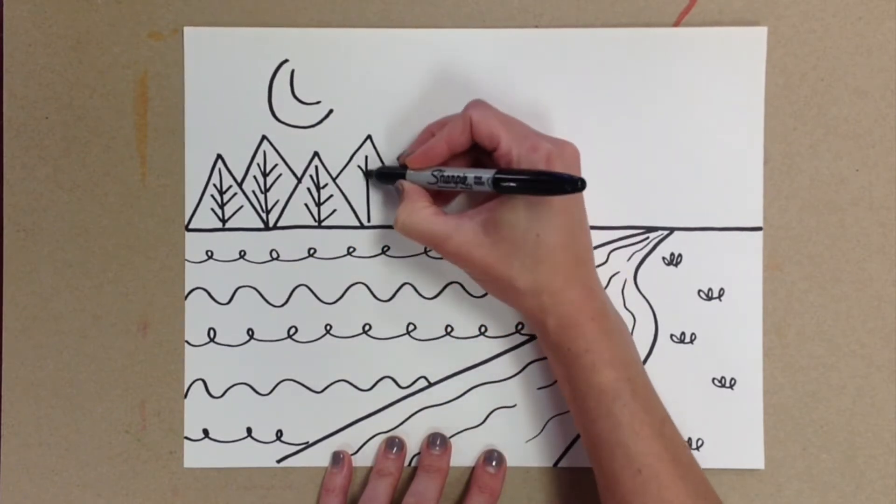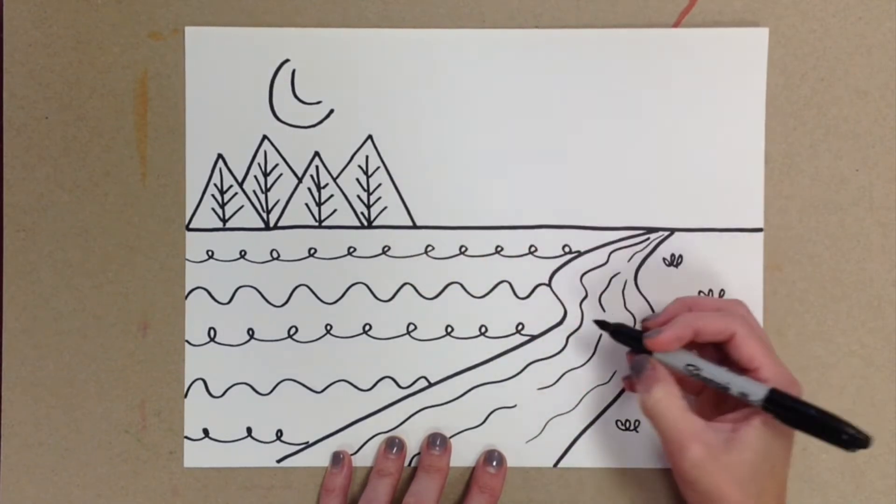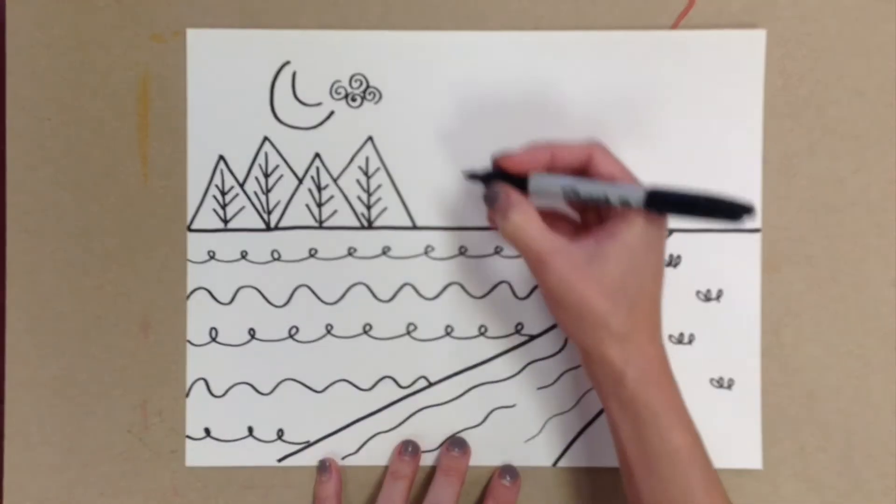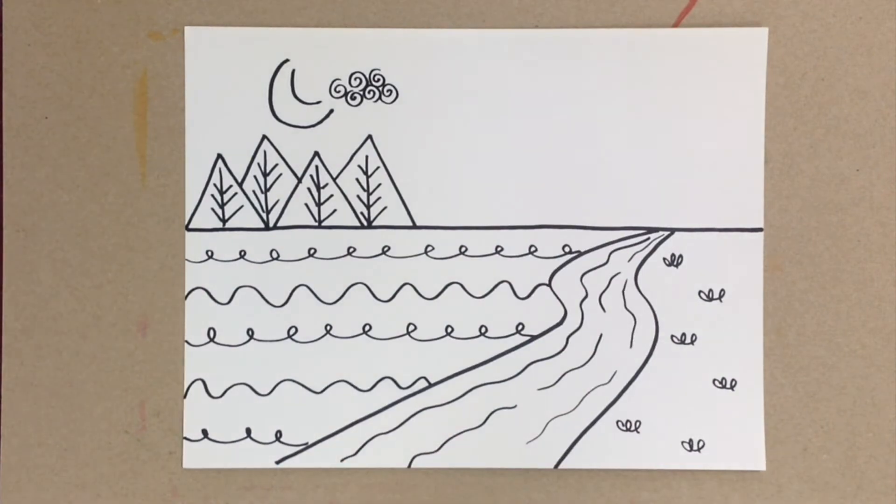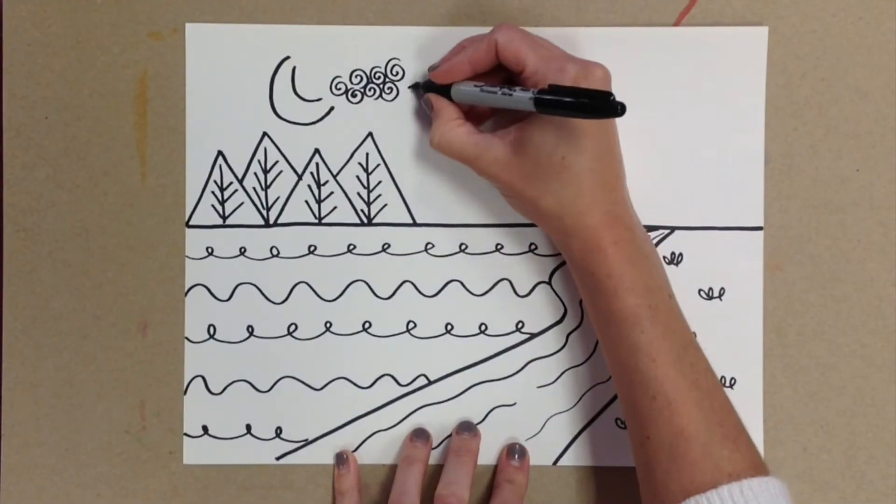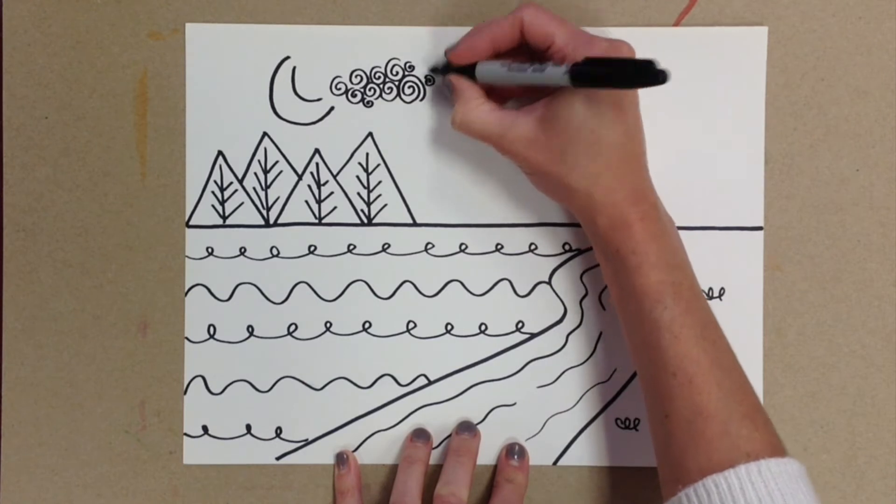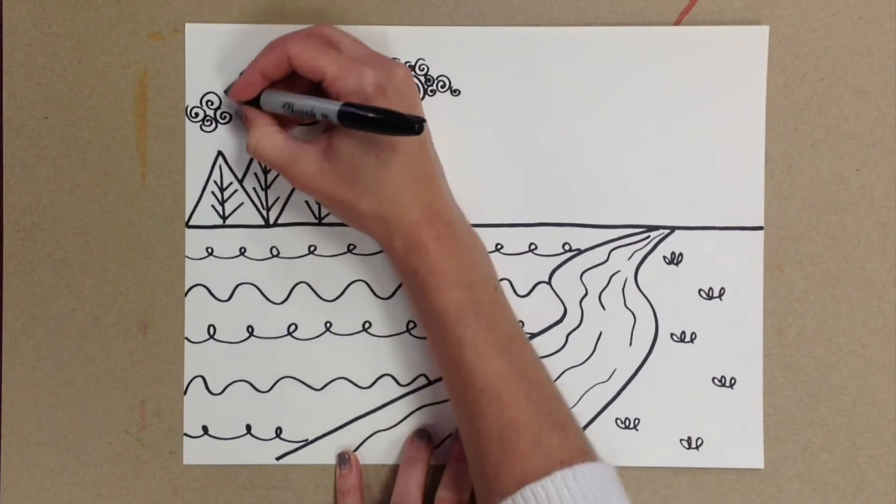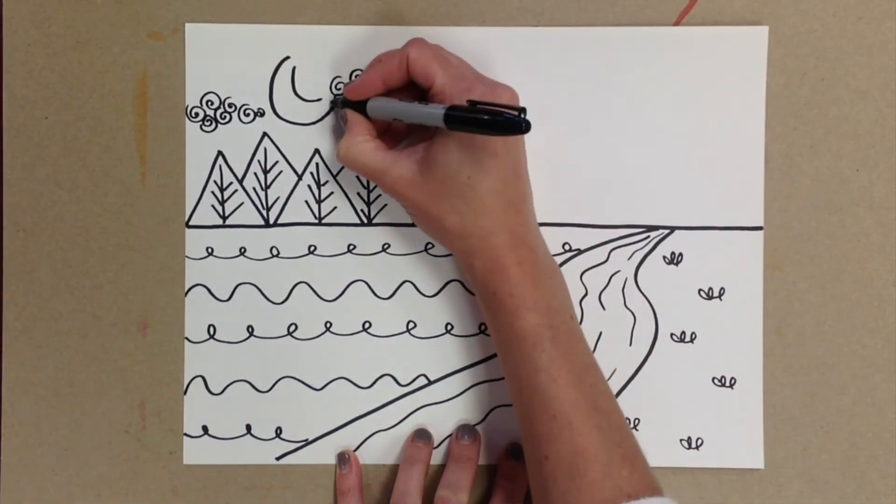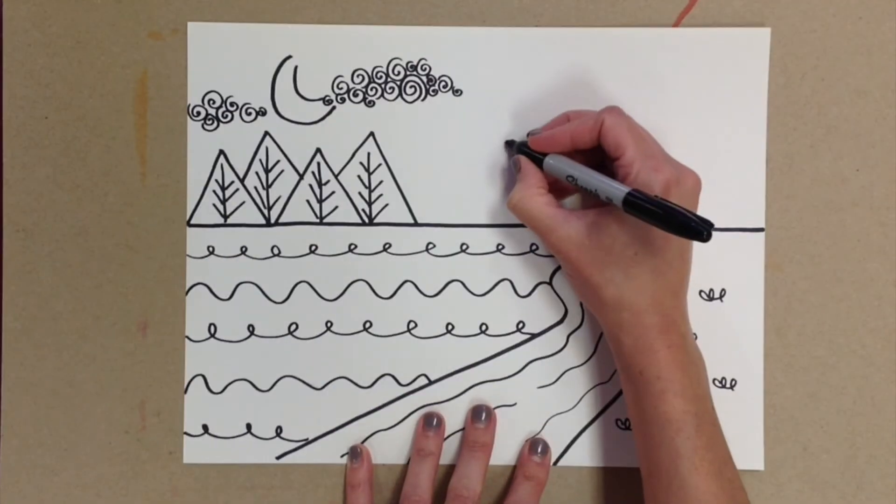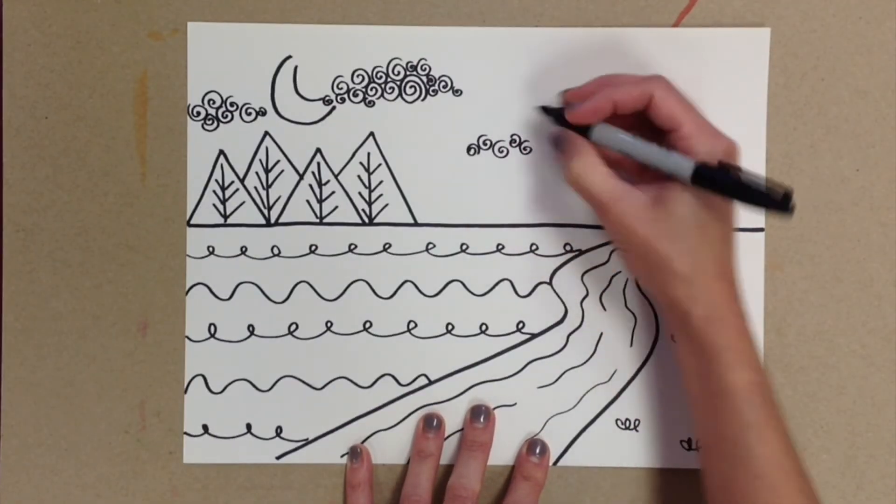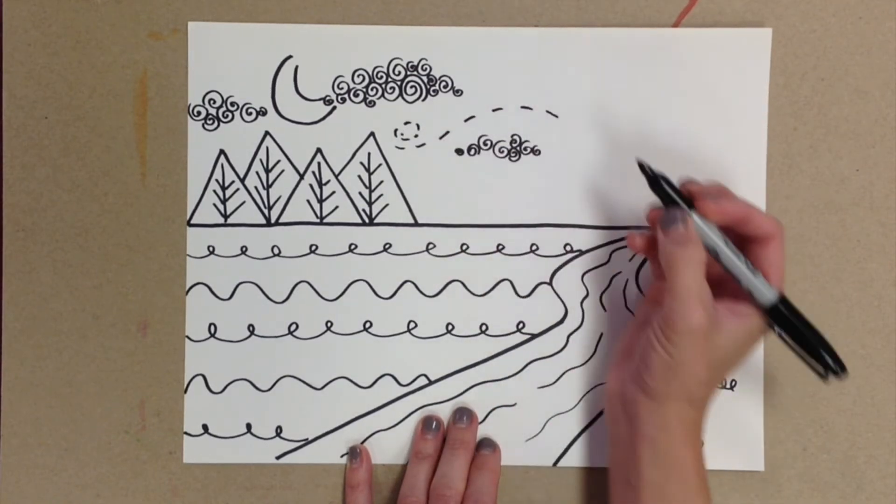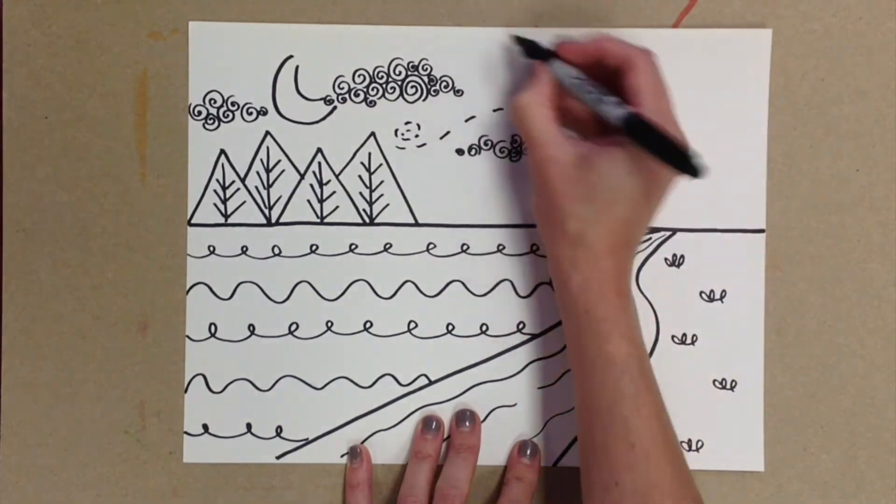I'm going to make some short curly lines. You could do a gathering of curly lines for clouds or even wind. I'm drawing a wavy broken line with a spiral on the end to represent wind.